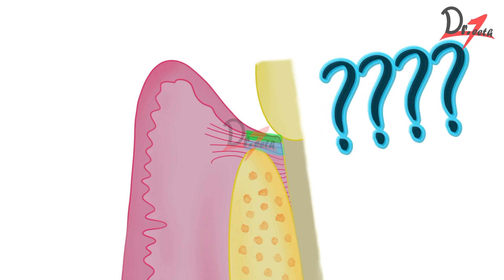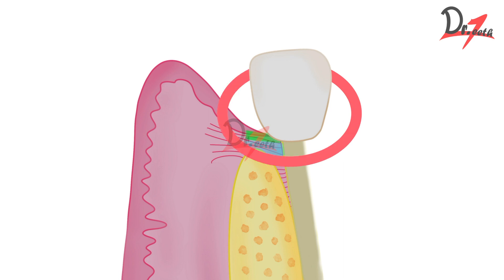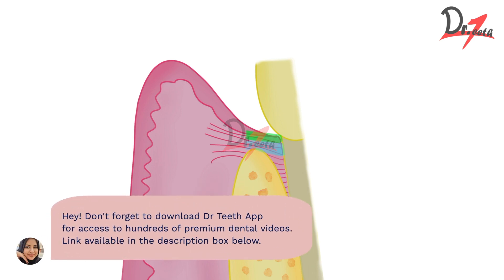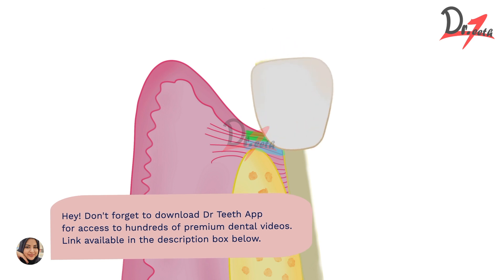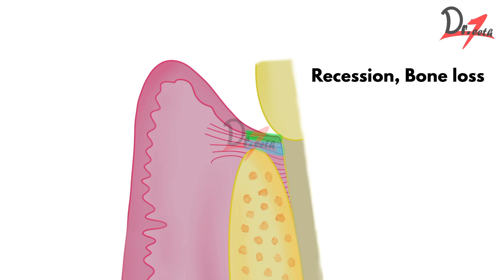So let us understand the importance of biological width. What does this epithelial and connective tissue zone do? They create a biological seal around the tooth — it acts as a protective barrier. This barrier prevents microorganisms and harmful byproducts from reaching the underlying alveolar bone. The body tries to maintain this width, and if you encroach upon this space — either by placing the crown margin too subgingivally or by doing procedures that violate the biological width — the body will respond either with gingival recession or chronic inflammation.